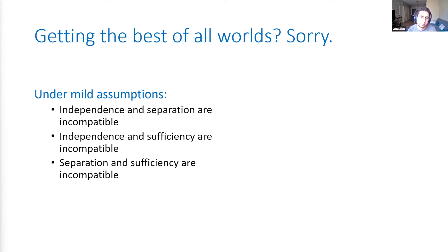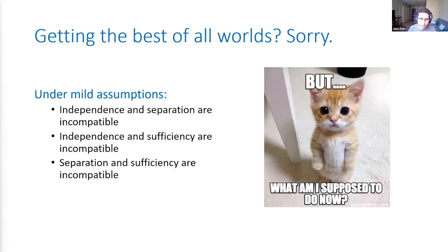One important thing to point out is that under very mild assumptions, these definitions of fairness are going to be incompatible with each other, so you can't have the best of all worlds. You're going to have to pick one of them. Under mild assumptions, you can't have independence and separation at the same time, you can't have independence and sufficiency at the same time, and you can't have separation and sufficiency at the same time. The answer to which one to choose is going to depend on the broader context and domain-specific human knowledge.